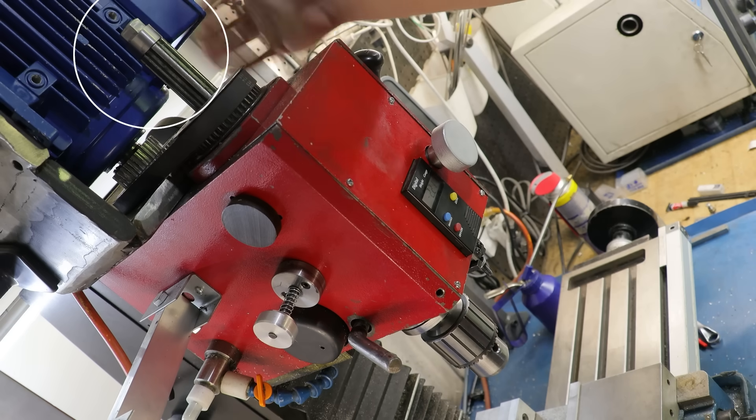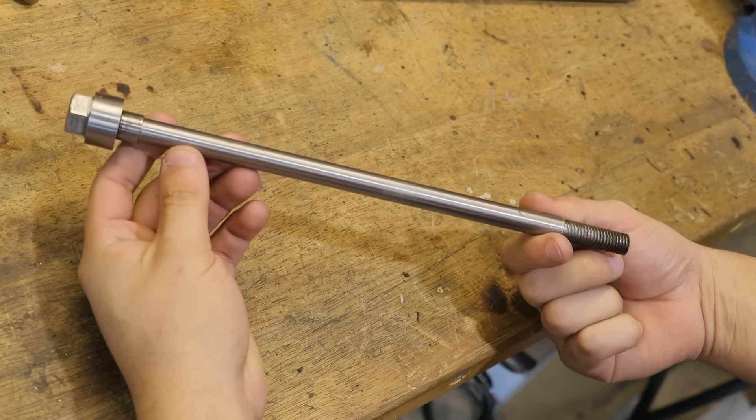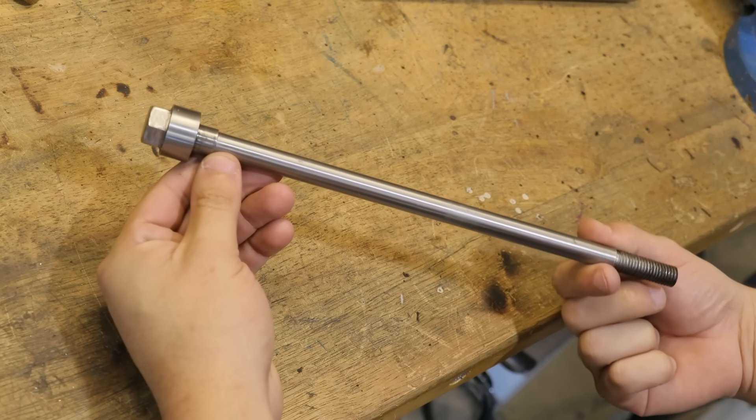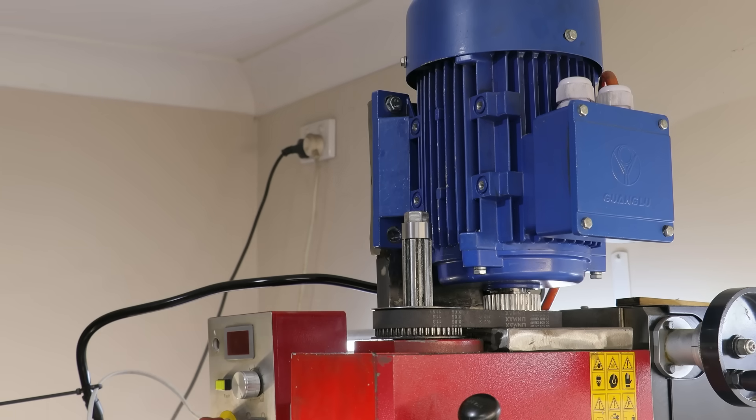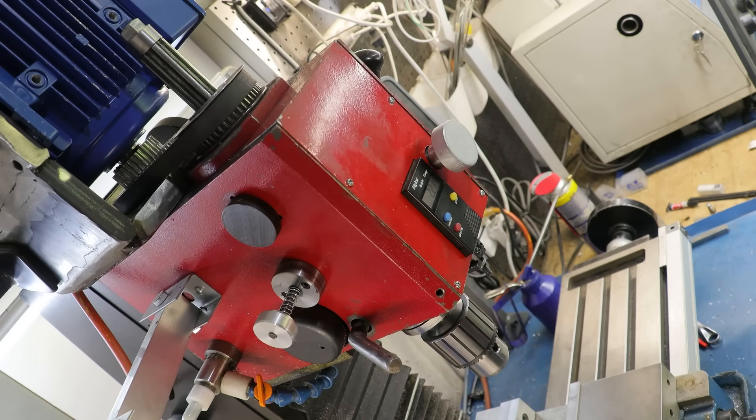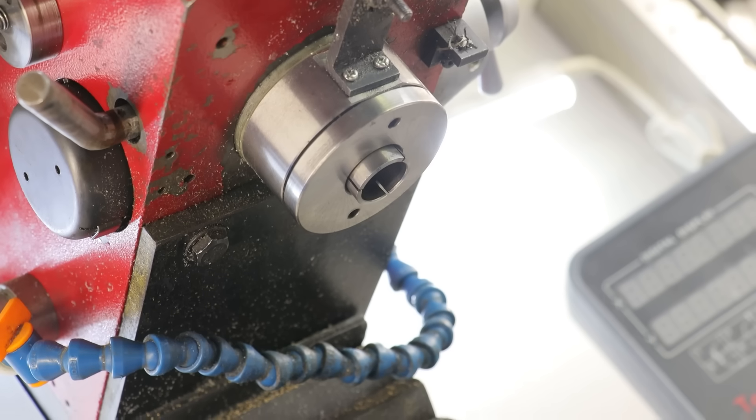And this is usually done through the use of a drawbar. All the drawbar really is, is just a long screw that goes all the way through the spindle and holds the tooling in place. This is just there to prevent the tooling from falling out when there's a side force.